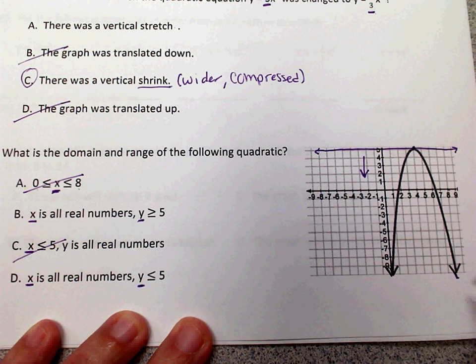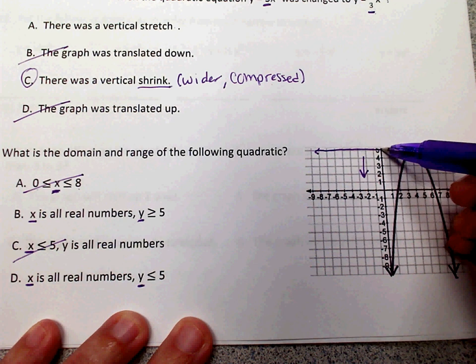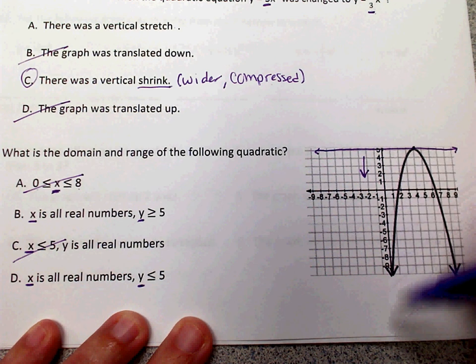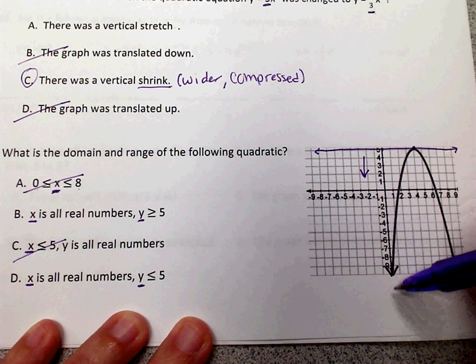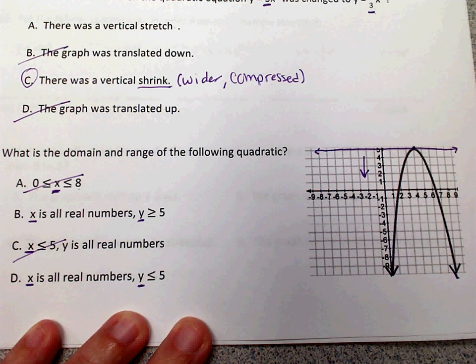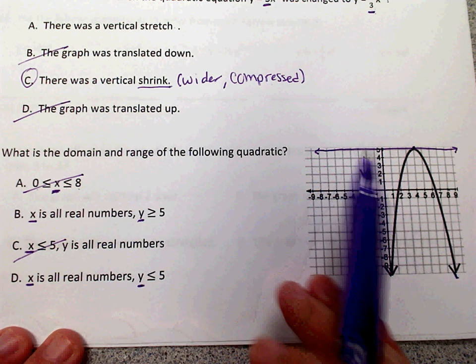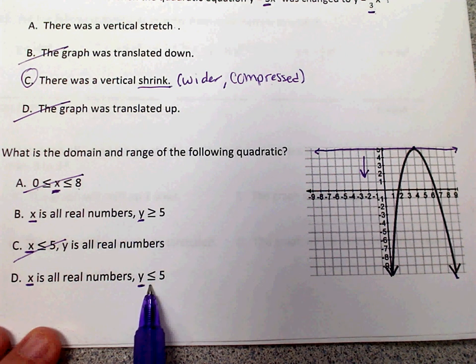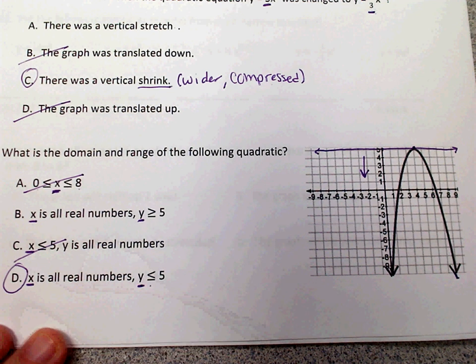It's opening down, so therefore your y values start at five and then it's everything below that. So this is going to be everything that's less than or equal to five. This symbol is your less than or equal to symbol. So d is the correct answer.